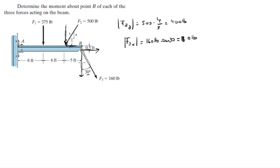However, the Y component is pulling directly away from B, therefore it has no moment because it's pulling directly away from B.